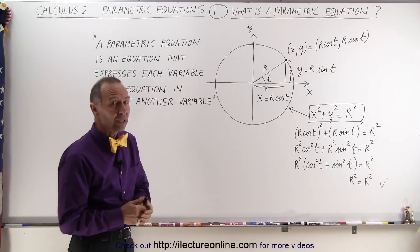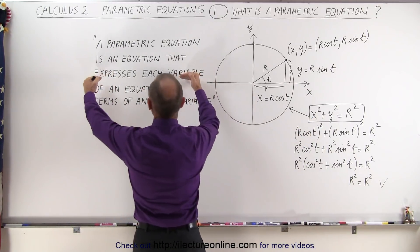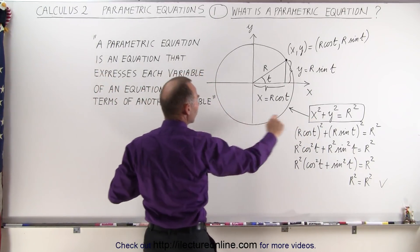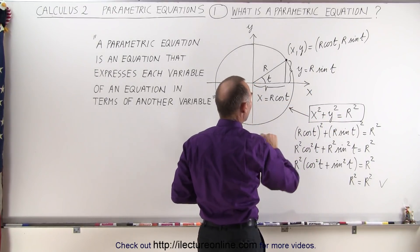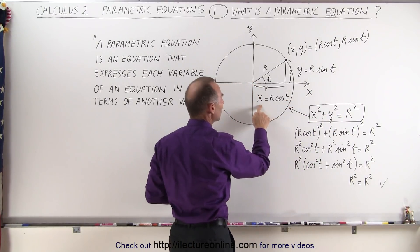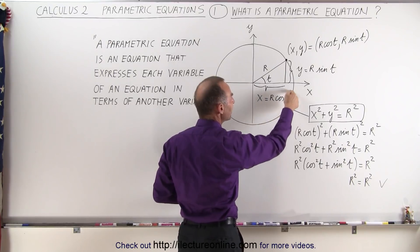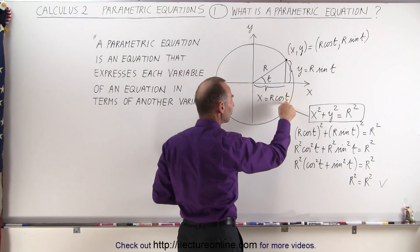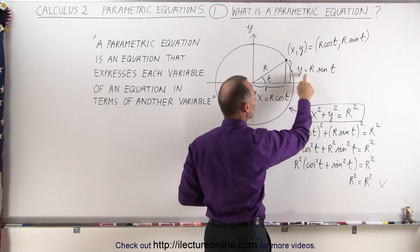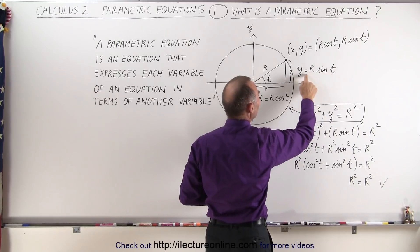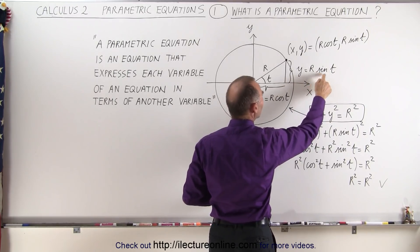What we can do is express each of the variables in terms of another variable. For example, x can be expressed as r times the cosine of t, t being that other variable, and y can also be expressed in terms of the variable t as r times the sine of t.